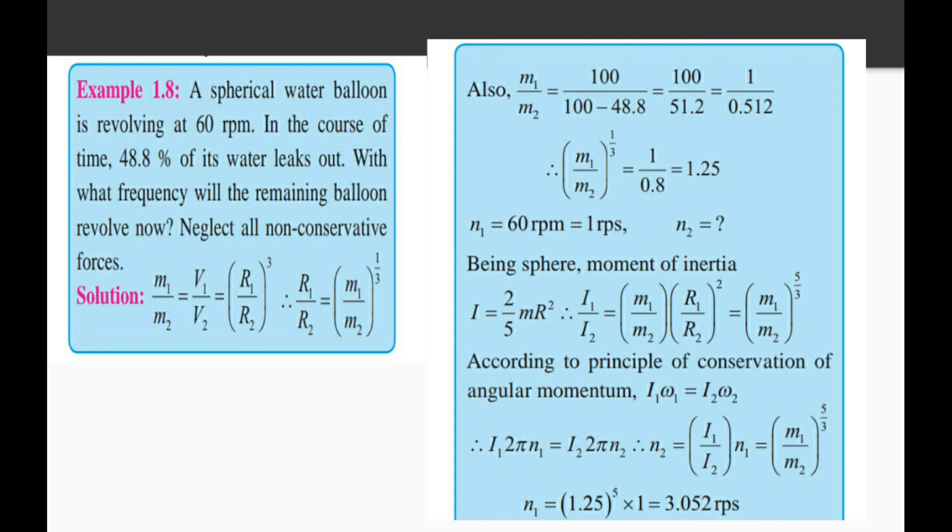For sphere, moment of inertia I = (2/5)mr². Therefore, I1/I2 = (M1/M2)(R1/R2)² = (M1/M2)^(5/3). According to principle of conservation of angular momentum, I1ω1 = I2ω2. Therefore, N2 = I1/I2 × N1 = (M1/M2)^(5/3) × N1 = (1.25)^5 × 1 = 3.052 rps.